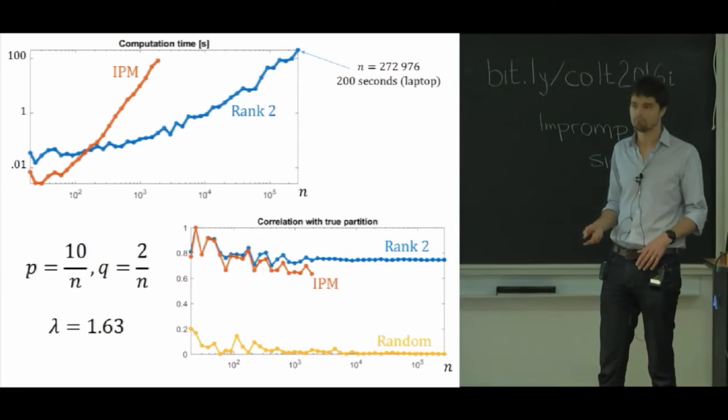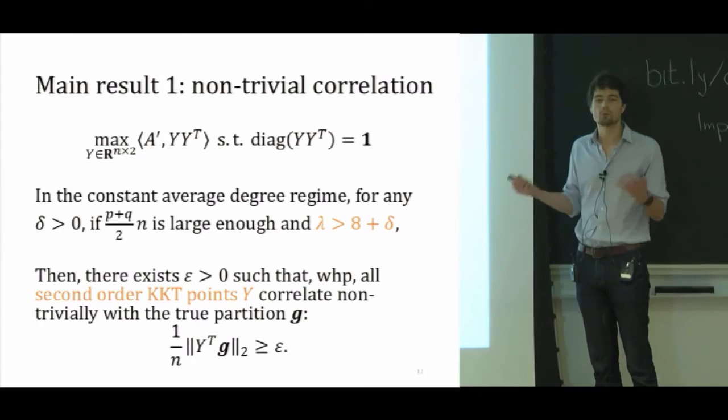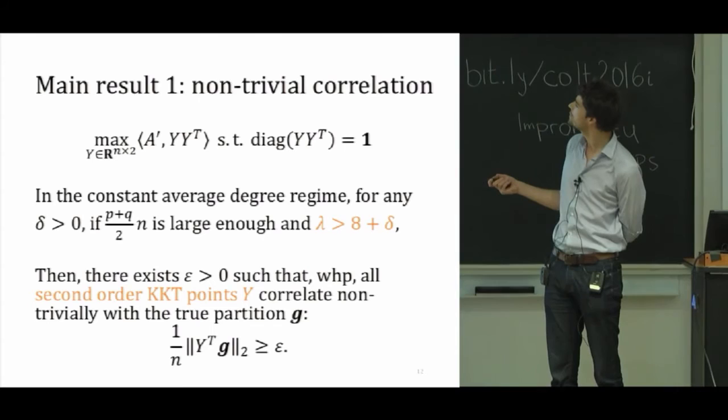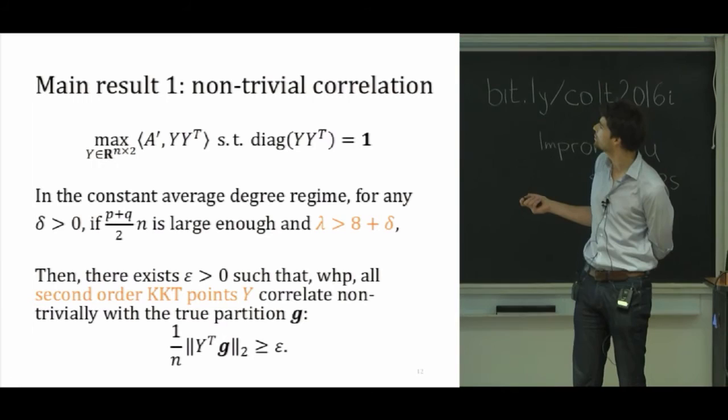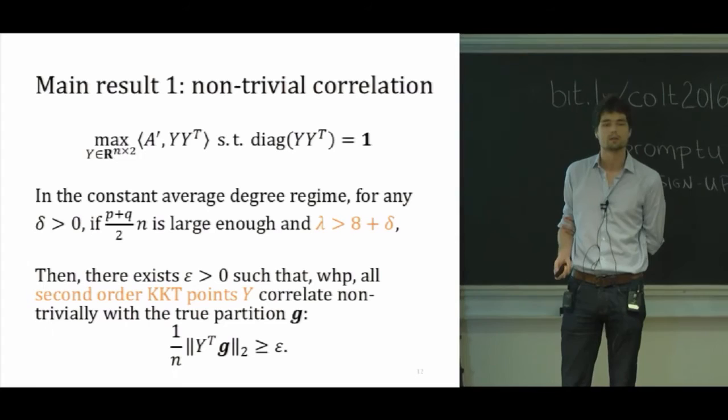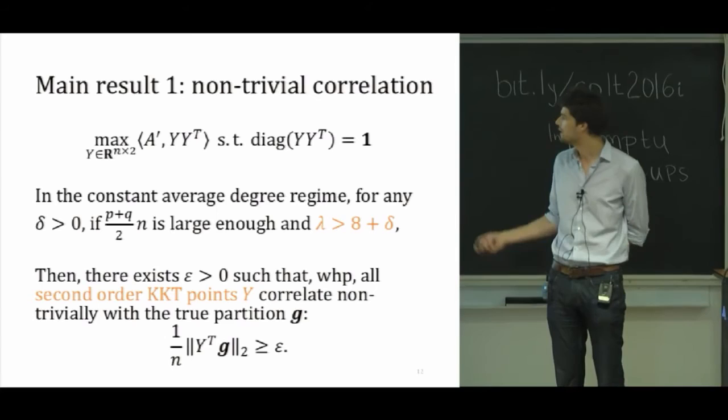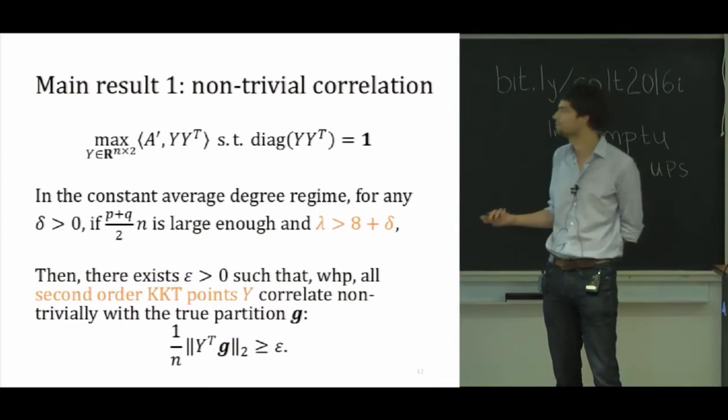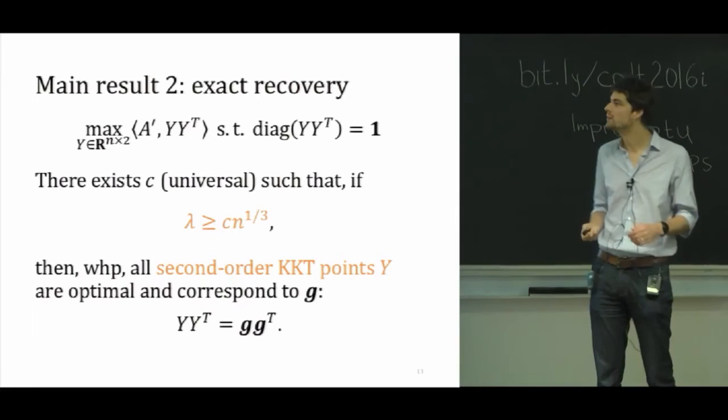So based on this observation, we want to say something about the statistical performance of whatever you get when you run this local method. And we have two statements. One about when is it true that you get non-trivial correlation. And here we see that the statement is as follows. If you place yourself in a constant average degree regime, then you have the same beginning of a statement as we had previously for when you solved the SDP except now we need lambda to be bigger than 8 plus delta. And here we would have liked to see a 1 plus delta. And based on experiments, I don't think this 8 is a real thing. I think it's just a problem in our techniques. But the point is that up to this constant that we wouldn't get right, it is true that the heuristic gives you something that has non-trivial correlation. So it's doing something interesting. And for this, you only need to compute points which satisfy first and second order necessary conditions. You can actually outline the proof of this statement because it's fairly easy.